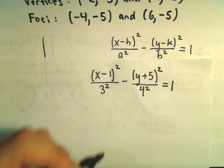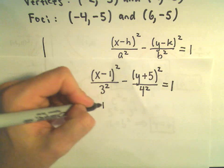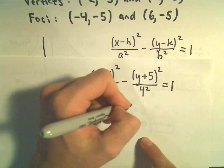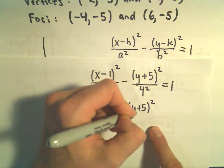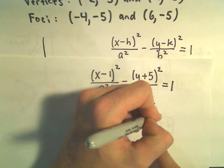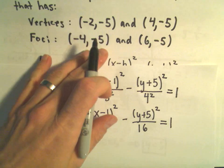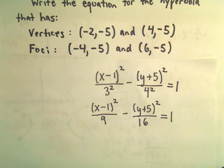And now we've got the equation for our hyperbola. Again, you can always multiply it out. (x-1)²/9 - (y+5)²/16 = 1. And now that would be the hyperbola that has the given vertices and the given foci.